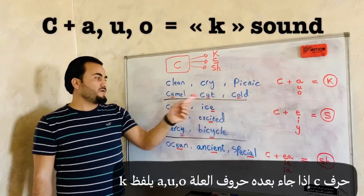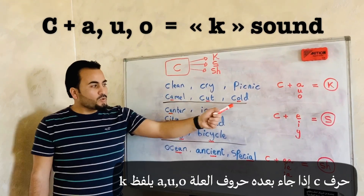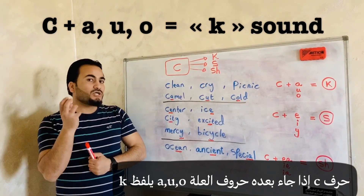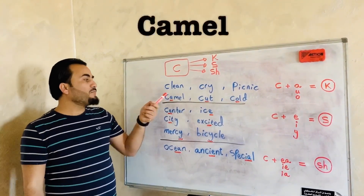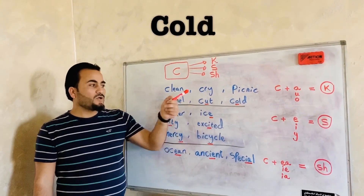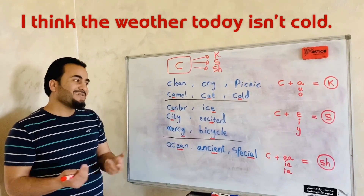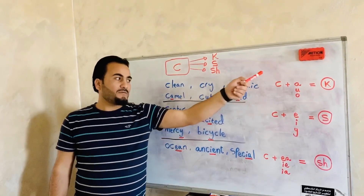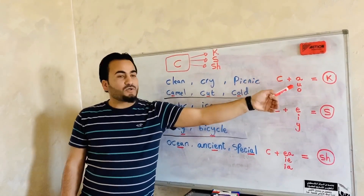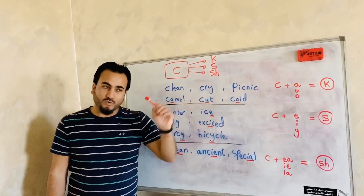In these three words, C before A, U, or O, the sound of C is going to be K sound. Camel. Cut. Cold. I think the weather today is not cold, right? Yes, it's fantastic. Very nice. So again, C plus A, U, or O equals K sound. Camel. Cut. Cold.